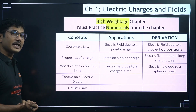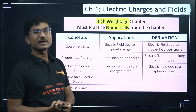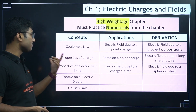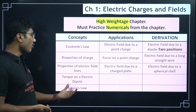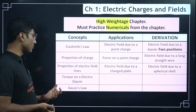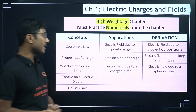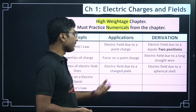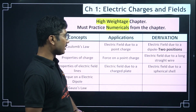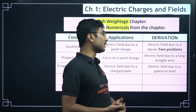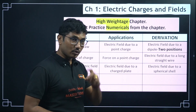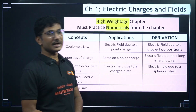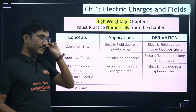Important concepts from Electric Charges and Fields: Coulomb's law, properties of charge, properties of electric field lines, torque on an electric dipole, and Gauss's law. For application questions: electric field due to a point charge, force on a point charge, electric field due to a charged plate. Key derivations include: electric field due to a dipole in two positions, electric field due to a long straight wire, and electric field due to a spherical shell.